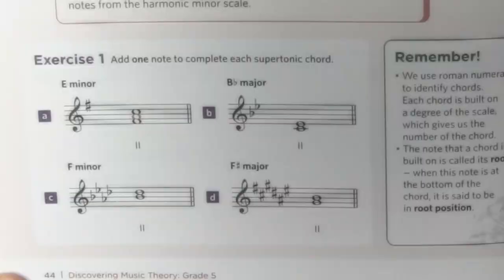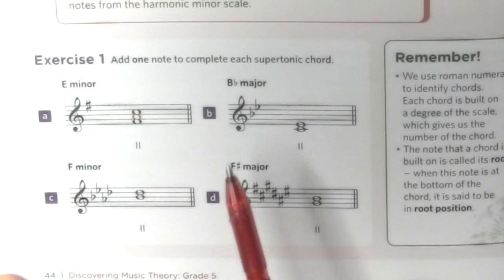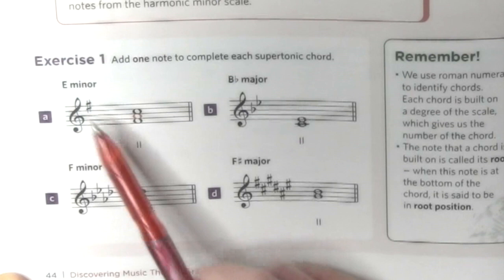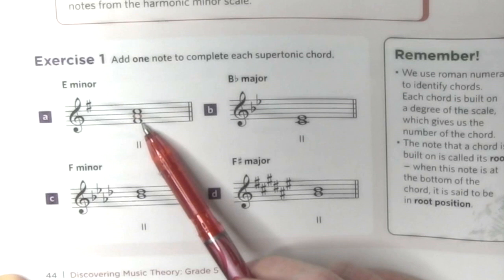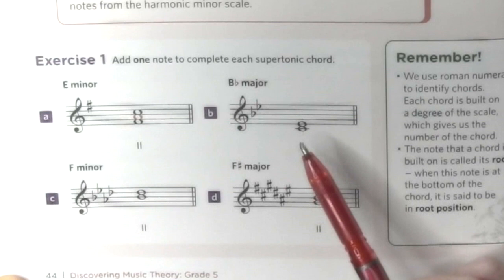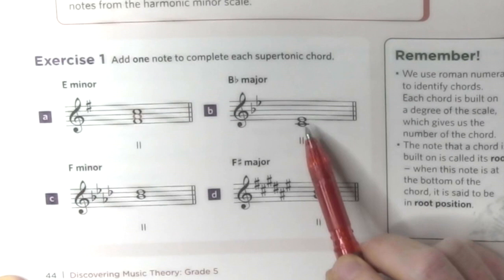Chapter 6 is about chords. In exercise 1, we need to add one note to complete the supertonic chords. Supertonic means the chord built on the second degree of a scale. So in the case of E minor, we need to build a chord on F — the second degree — and the middle note was missing here. For B-flat major, the second degree is C, so the bottom note must be C, giving us C, E, and G.